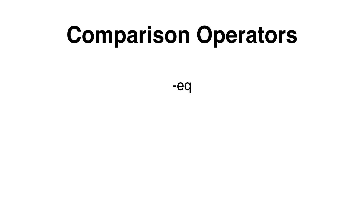The comparison operators that we can use are: minus EQ that stands for equal, the minus LT that stands for less than, the minus GT that stands for greater than, the minus GE that stands for greater or equal to, the minus LE that stands for less or equal to, and the minus NE that stands for not equal to.